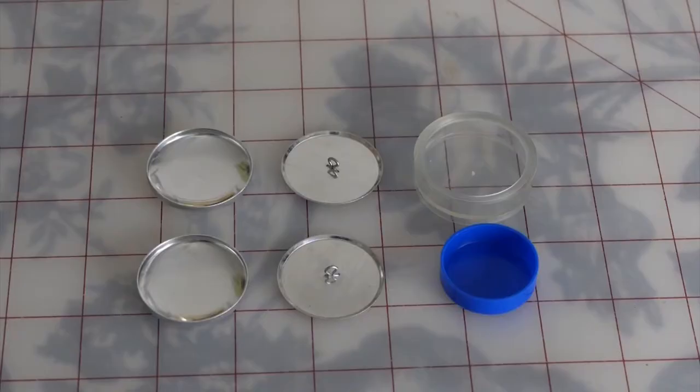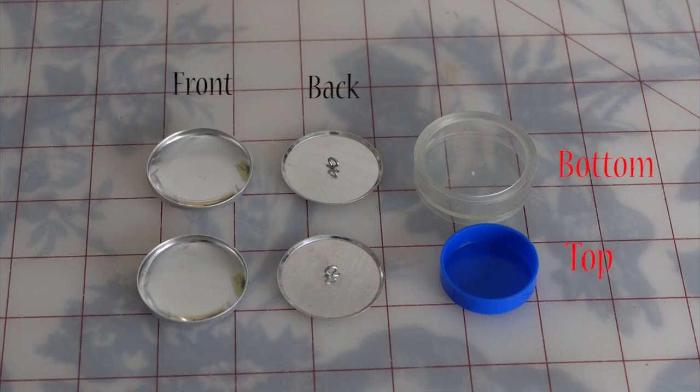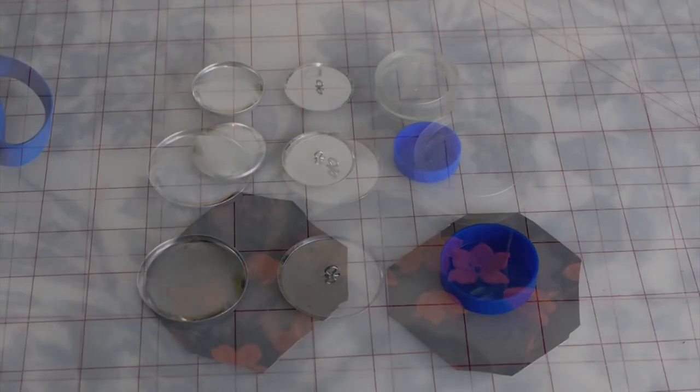When you open the package, this is what you're going to get. On the left, you're going to see the face of the button. In the middle there, you're going to see the back of the button. And on the right, on the top there, you're going to see clear plastic part that goes on the bottom. And the blue cap, that's what you're going to use to hammer down the button so it connects together.